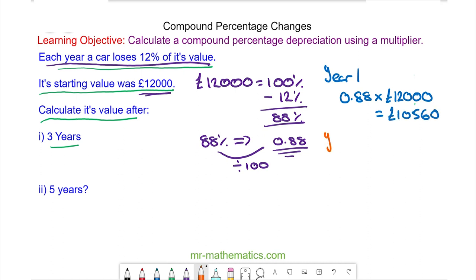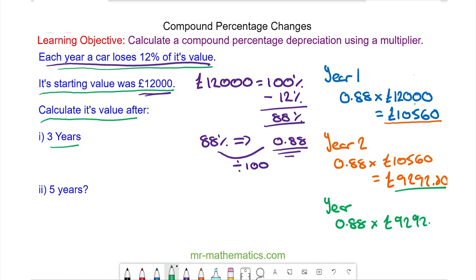In year two we have the same multiplier of 0.88 multiplied by the amount we have from the end of year one which is £10,560. So now we have £9,292. We have £8,177.66.